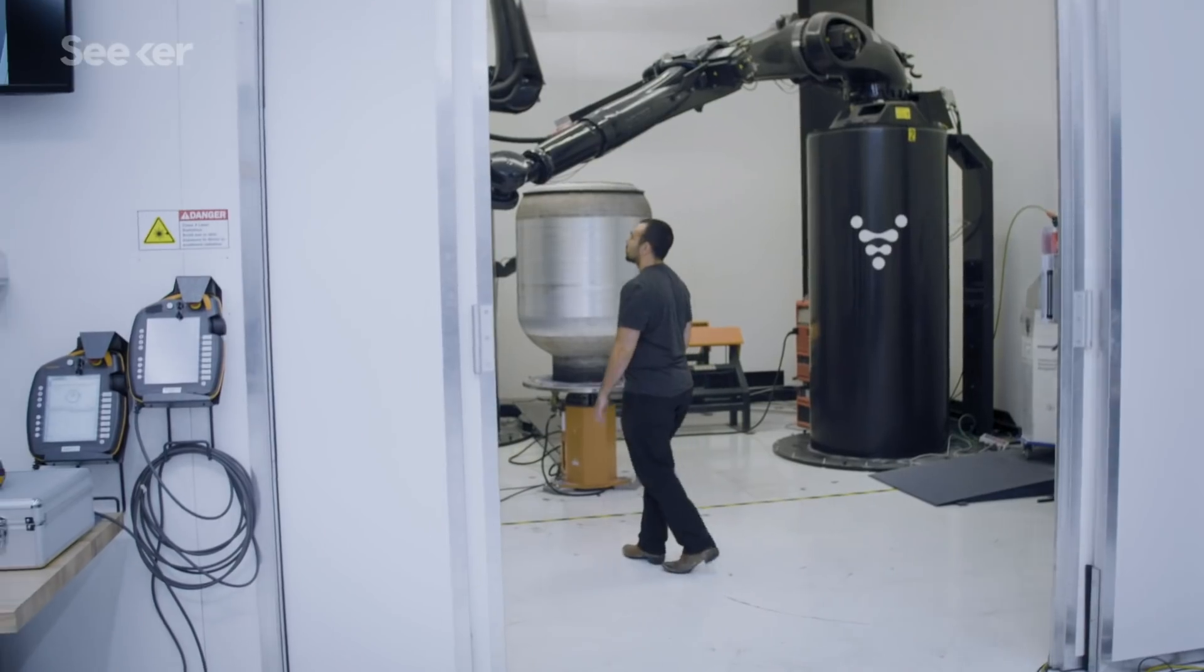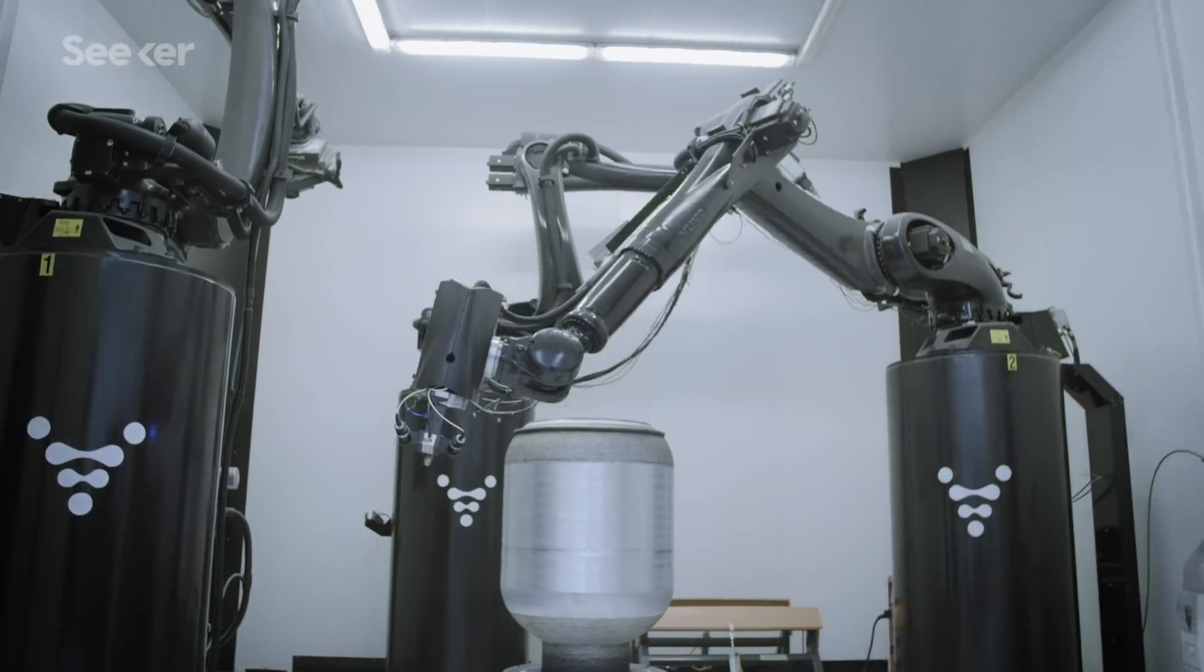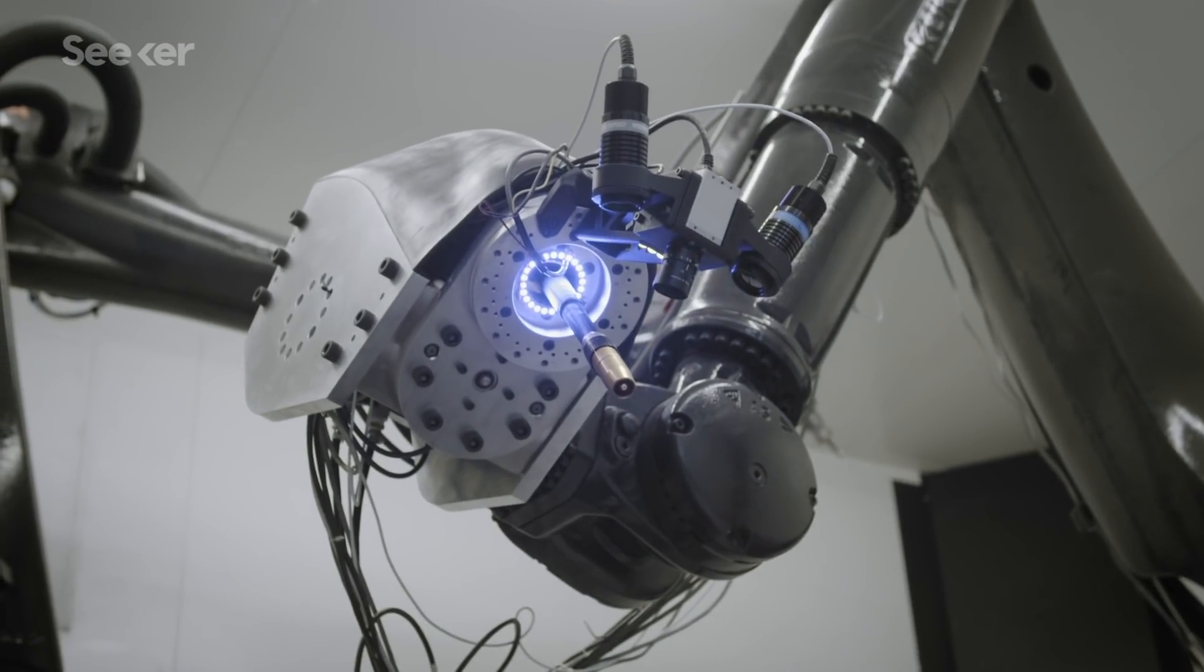Stargate is the world's largest metal 3D printer, entirely built and designed in-house. The core of it includes three robot arms, one of which is doing printing and the other two are doing post-processing.